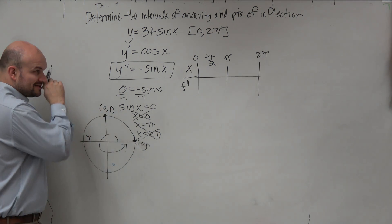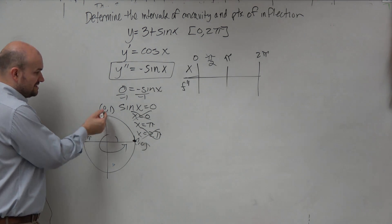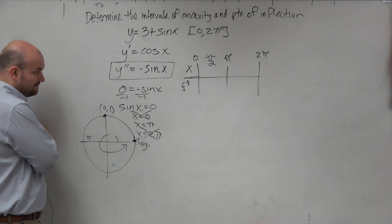Pi over 2 is right here. That's pretty easy. 0 comma 1. Is sine positive or negative? Yep. Very good.